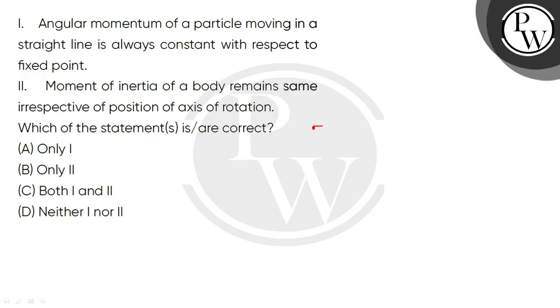We have a particle that's going through a straight line. Now we have a fixed point here. In this aspect, angular momentum is constant. It's right. Now the velocity of the particle is in the direction of motion. Now when the particle moves straight.